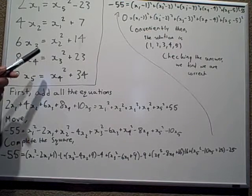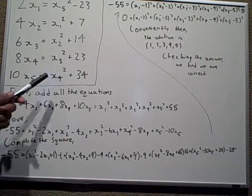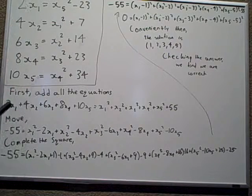8x4 equals x3 squared plus 23, and 10x5 equals x4 squared plus 34. So there are 5 equations.